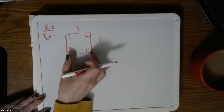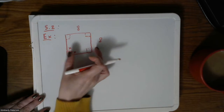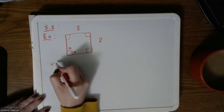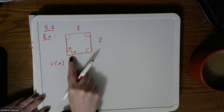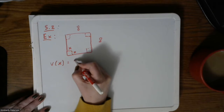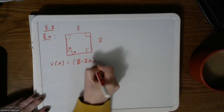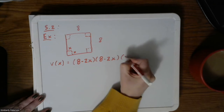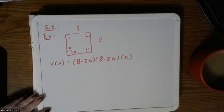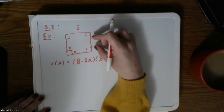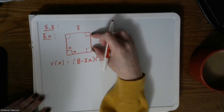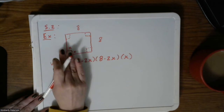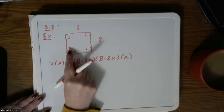So the idea is, once I have removed the corners, I will fold this box up on itself, and we are trying to calculate the volume. We came up with the volume function depending on x: length was 8 minus 2x, width was also 8 minus 2x, and the height was x itself.